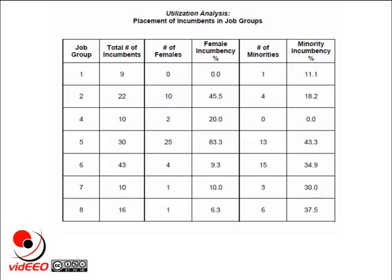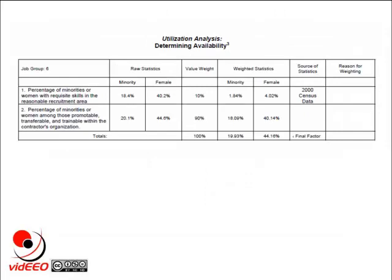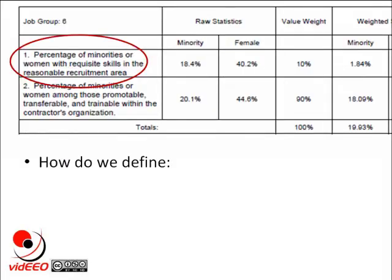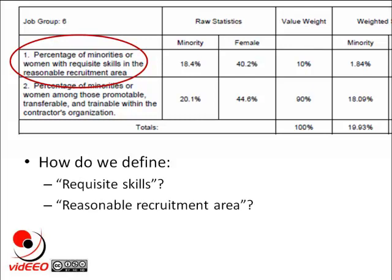We go through and calculate the female incumbency percentage and the racial minority incumbency percentage for each of our job groups. Then we're ready to move on to the key piece of the utilization analysis: the availability estimate. The availability estimate is our external benchmark — how we compare the percentage of women and minorities that we employ to what others are doing, presumably in a non-discriminatory environment. What we're looking for is the percentage of women and minorities with requisite skills in the reasonable recruitment area available for employment in the position in question. That leads us to two questions: how do we define requisite skills, and how do we define a reasonable recruitment area?